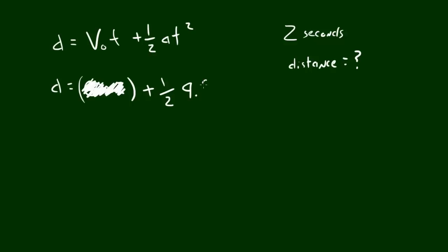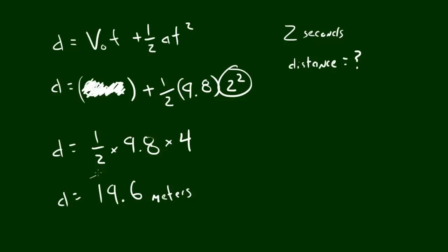What we do want to do is add 1 half acceleration, which is 9.8, times time squared. Now this time what we do is we have 2 squared, and 2 squared equals 4. So the distance traveled after 2 seconds equals 1 half times 9.8 times 4. Why? Because 2 squared is 4. So if we go ahead and calculate that, I think we end up with 19.6 meters. Let me double check. 8 times 4, 6. Yep. 19.6 meters.